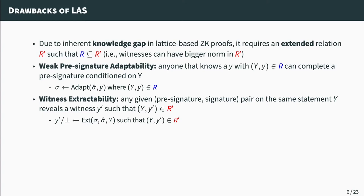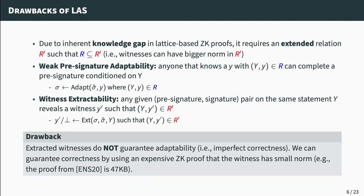The first drawback of LIS comes from the inherent knowledge gap of lattice-based zero-knowledge proofs. They need to consider two relations: a base relation R and an extended relation R', where extended means it includes witnesses with bigger norm compared to R. For this reason, LIS only achieves weak pre-signature adaptability: adaptability works for witnesses in the base relation R, whereas witness extraction only guarantees that extracted witnesses belong to the extended relation R'. This means extracted witnesses do not guarantee adaptability — the construction has imperfect correctness — and all applications using LIS must also use an expensive exact lattice-based zero-knowledge proof to prove the witness has small norm.